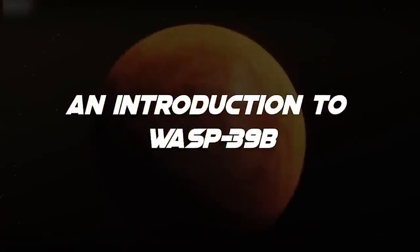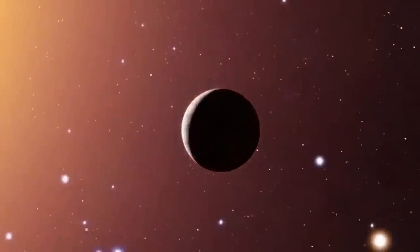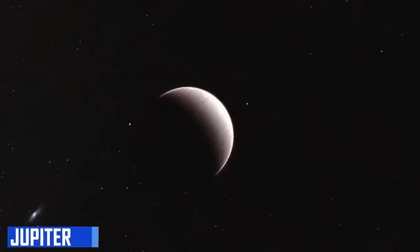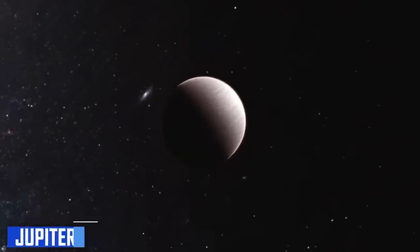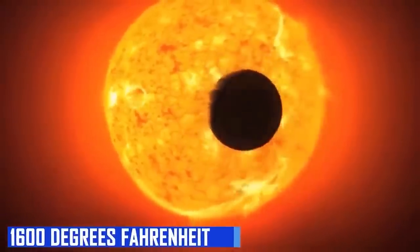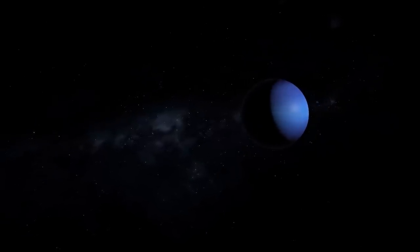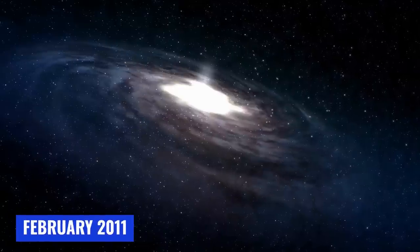WASP-39b is a hot gas giant 1.3 times Jupiter's diameter and one-fourth its mass. Its high temperature, which is around 1600 degrees Fahrenheit or 900 degrees Celsius, is partly responsible for its extraordinary puffiness.